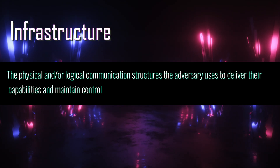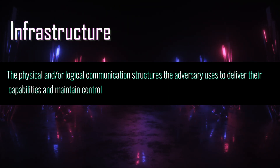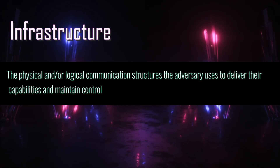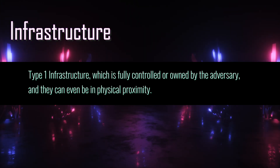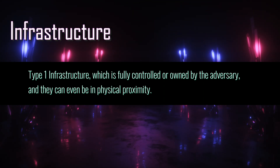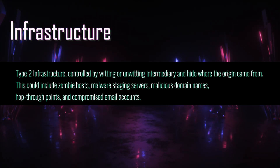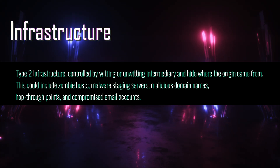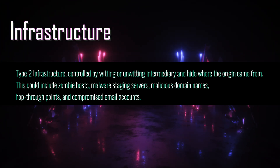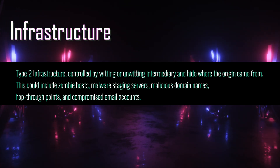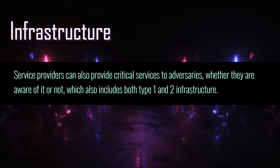The infrastructure feature describes the physical and/or logical communication structures that the adversary uses to deliver their capability and maintain control of those capabilities, such as C2. There are two types of infrastructure: Type 1 infrastructure, which is fully controlled and owned by the adversary and can be in physical proximity; and Type 2 infrastructure, which is controlled by a witting or unwitting intermediary. Type 2 is typically the infrastructure that a victim will see as the adversary and serves to hide where the origin came from. This could include hosts, malware staging servers, malicious domain names, hop-through points, and compromised email accounts. Service providers can also provide critical services for adversaries, whether they are aware of it or not, and this can include both Type 1 and Type 2 infrastructure.